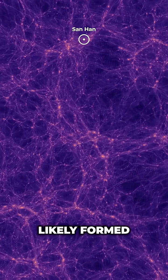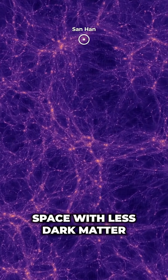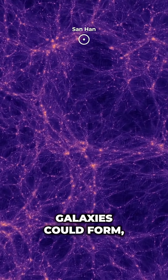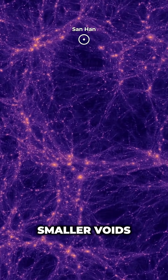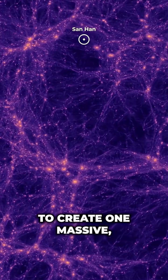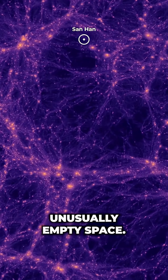However, the Bootes Void likely formed from regions of space with less dark matter where fewer galaxies could form, leaving it largely empty. Over billions of years, smaller voids may have merged to create one massive, unusually empty space.